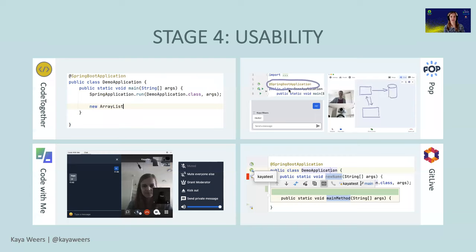We go to our last and final stage, which is about usability. The first thing I checked was code completion, because I don't want to type everything out - I want the IDE to fix that for me. For nearly all the tools that works perfectly. The only thing I could find is that CodeTogether didn't complete with the brackets included - the ArrayList you see, that's the one I completed, but it only types the text without the brackets. The other tools do include them. But that's a minor detail.